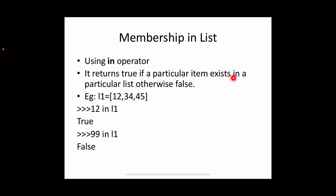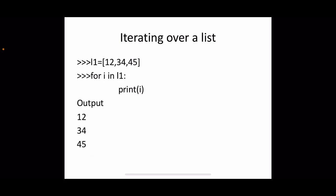For membership testing, with l1 = [12, 34, 45]: checking '12 in l1' returns true, and '99 in l1' returns false.